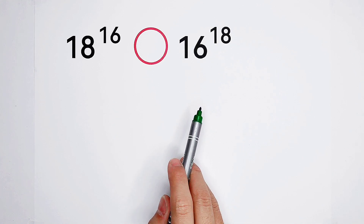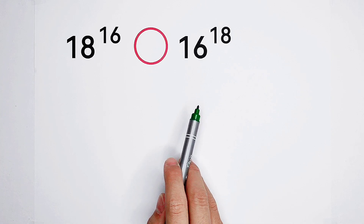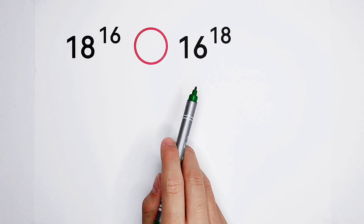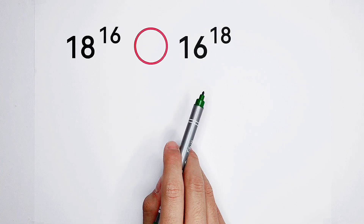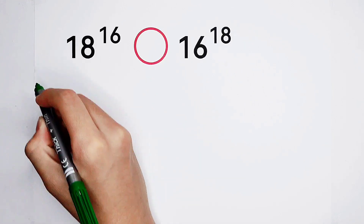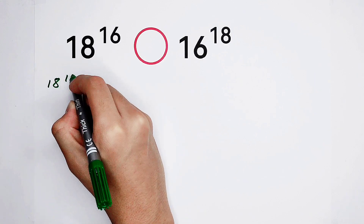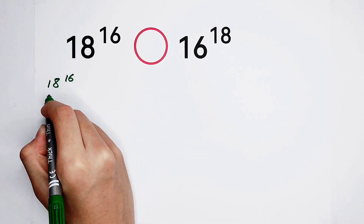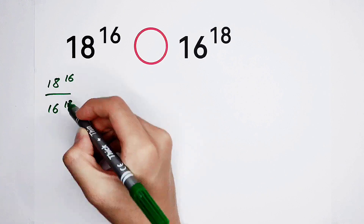Usually, one method — division. We can divide both sides by 16 to the power of 18, and compare the division with 1. So, 18 to the power of 16 divided by 16 to the power of 18.